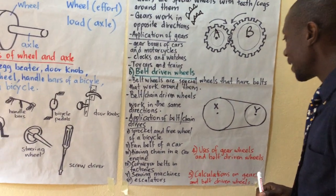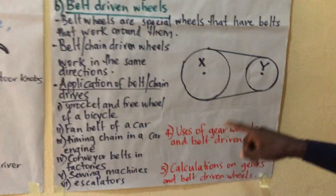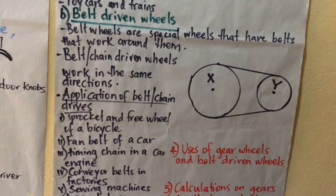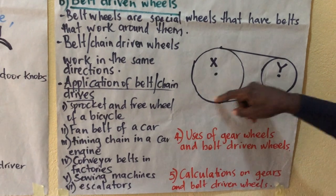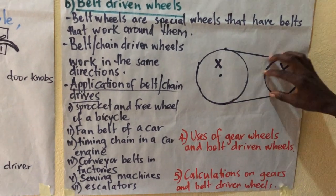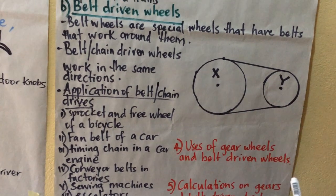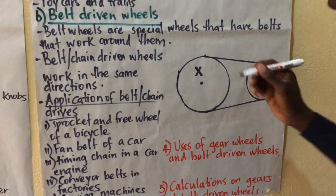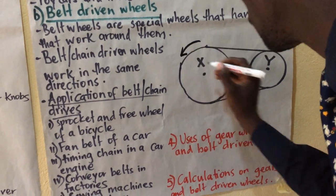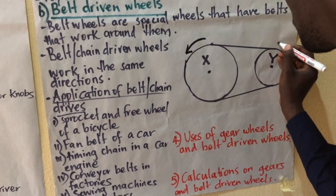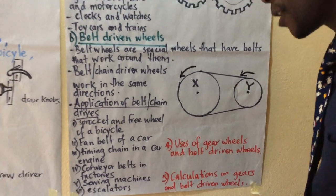For example, we have this picture here. We have a bigger wheel — this one is working as the effort, this one is working as the load. For example, on a bicycle, this one will be the effort — the pedals are here — and the load, the rear wheel, is on this one here. So they work in the same direction: if this one is moving anti-clockwise, this one will also be moving anti-clockwise, and the other way around.